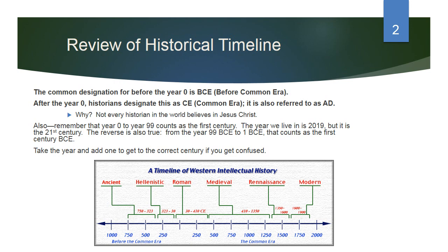Remember that year zero to year 99 counts as the first century. The year we live in, 2019, is the 21st century. The reverse is also true: from 99 BCE to 1 BCE counts as the first century BCE. So what you do is take the year and add one to get to the correct century if you get confused.